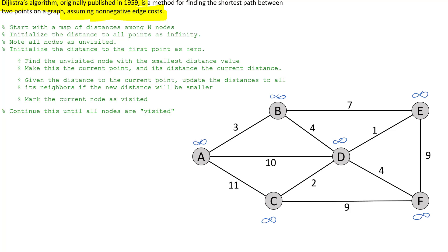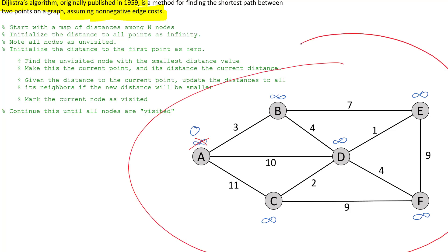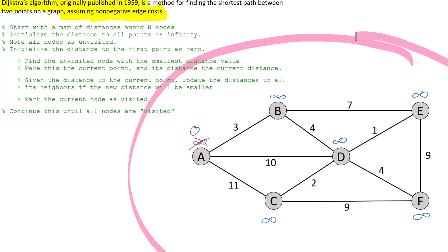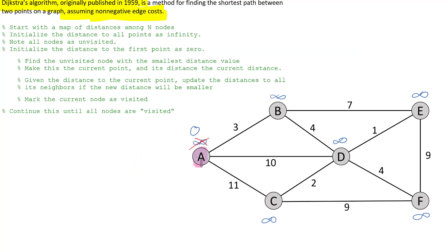The first point we're going to start at is A, just for no particular reason. The distance to A, instead of being infinity, is zero — it costs zero to get to A from A. Now this is where the algorithm starts. We enter a while loop: find the unvisited node with the smallest distance. Right now all nodes are unvisited and infinity except A which is zero, so A is clearly the smallest. We set our current node as A and update distances to everywhere we can reach from A.